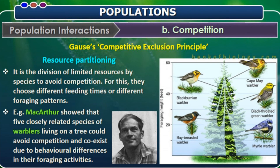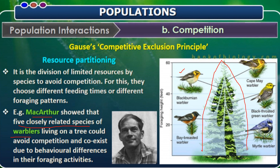Resource partitioning means that due to the limited availability of resources, species select different feeding times to avoid competition. One forages during the daytime or early morning, and others at different times. They schedule differently so they can change their foraging activities and live in the same habitat without interfering with each other. This was well explained by scientist MacArthur, who showed that five closely related species of warbler birds living on the same tree had different foraging activities. By changing their time schedules, there is no competition among those five species — this is called co-existence rather than competition.